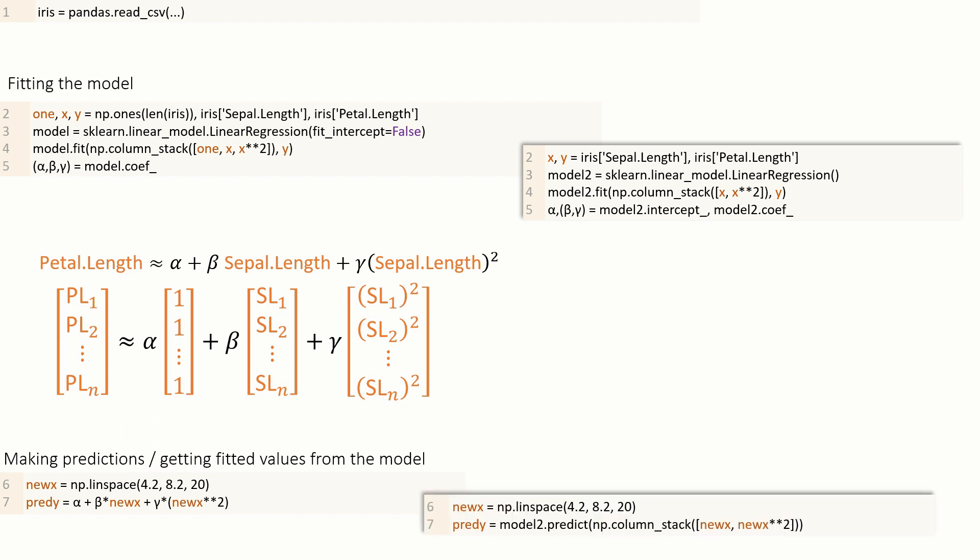We'll set up new x, a vector containing all the sepal lengths at which we'd like to predict petal length, just as we did before, but now we use the command model.predict on the model object that we just fitted, and we give it the new matrix of features, and it keeps track of the coefficients for us.